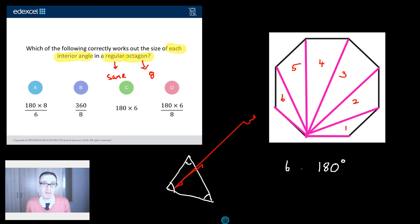So, what does that mean my sum of my total interior angles is of this octagon? Six lots of 180. Have I finished? Is that the end of the fun? Is it heck? Because that is just the total interior angles. This question has asked for each interior angle.